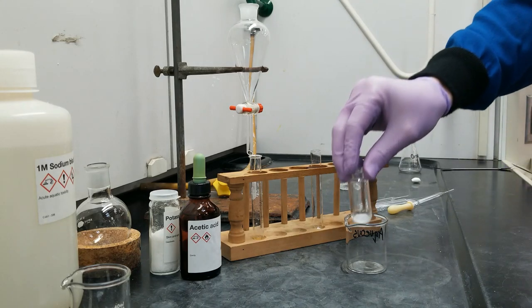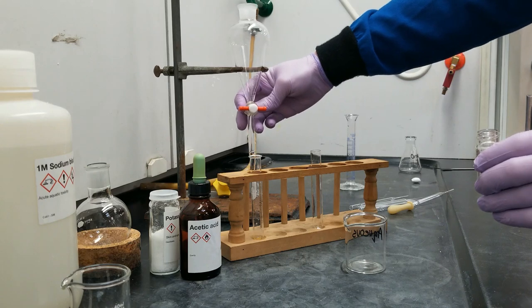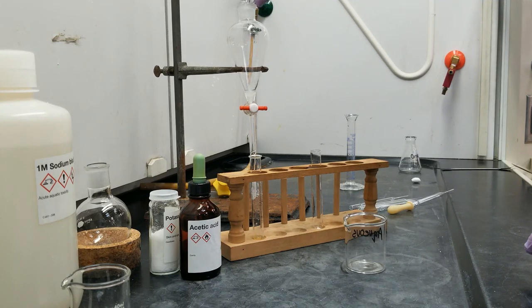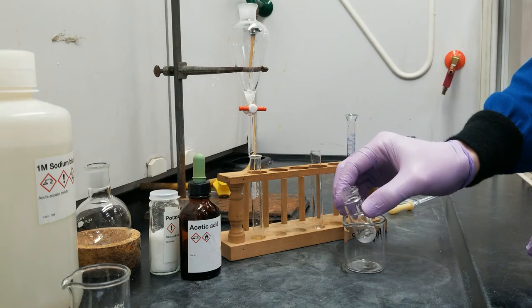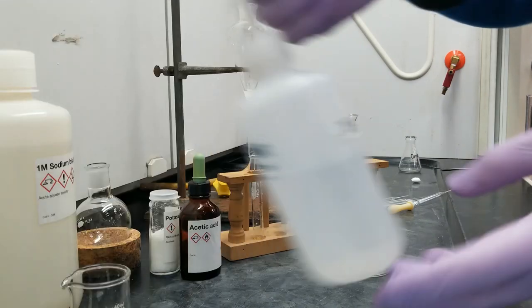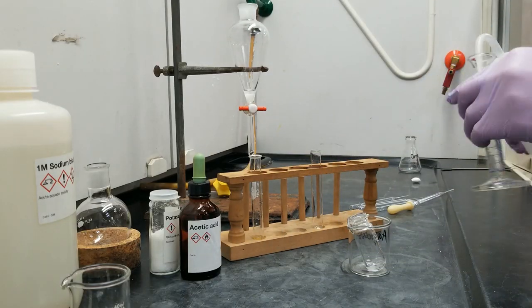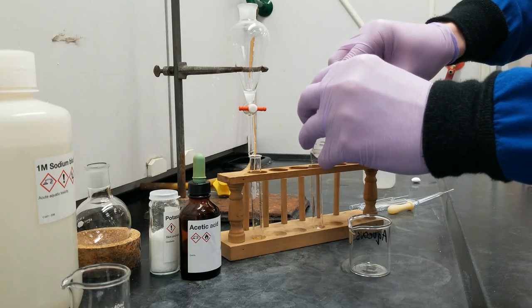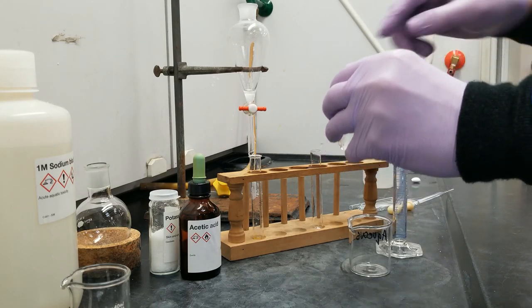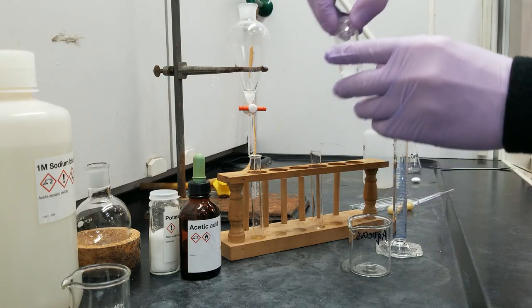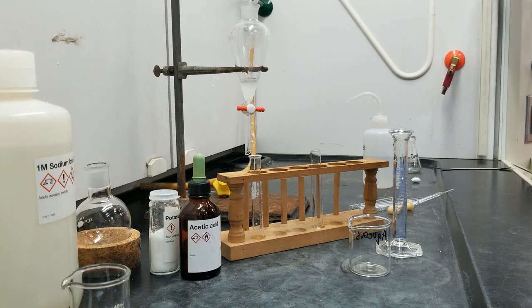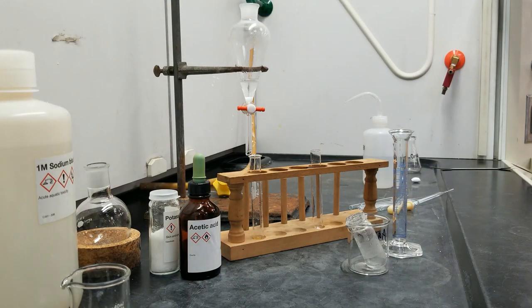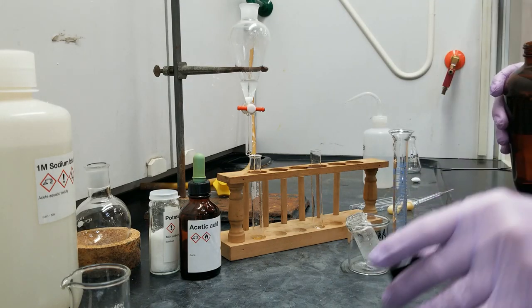So make sure that my separatory funnel is in the closed position and I'm just going to go ahead and dump this in. And the next thing I'm going to extract with is 5 milliliters of water. And I'm going to run that through my reaction vessel first just to make sure that the contents of that vessel all make it into the separatory funnel. And then we're also going to extract with 8 milliliters of ethyl acetate to provide more of an organic layer for our product to get dissolved in.